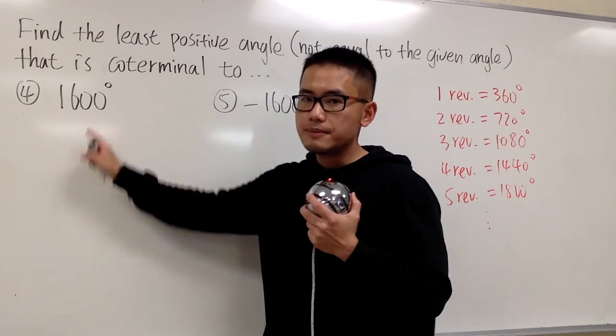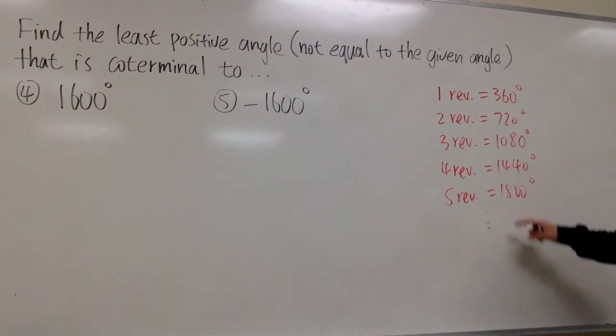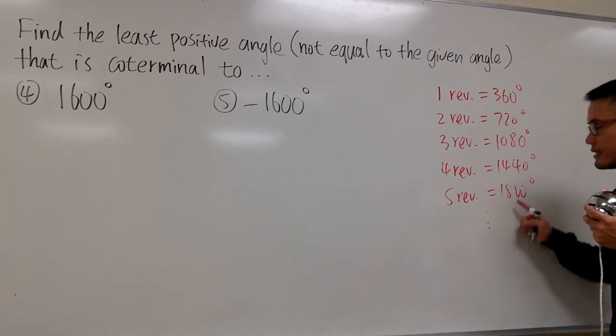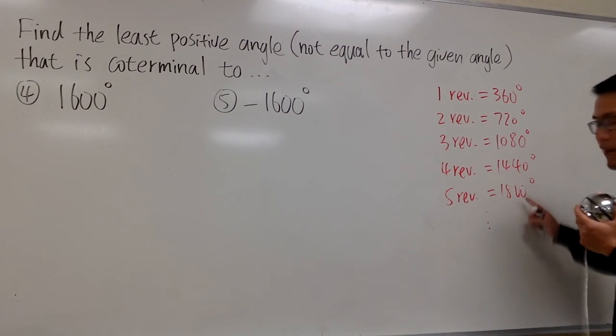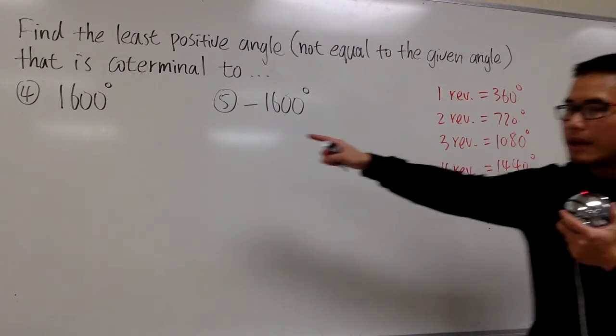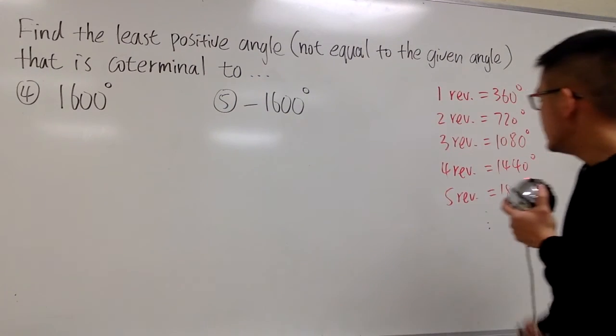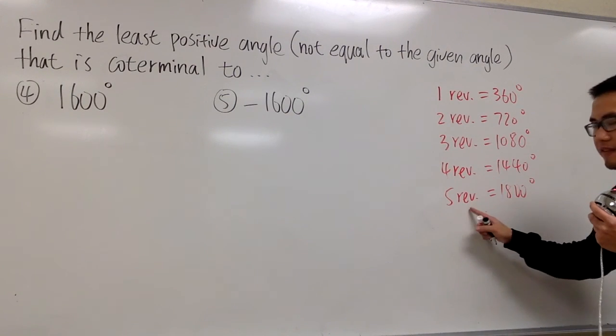Now let's take a look. 1600 degrees. This is, in fact, in between of this and that. 1600 is in between of this and that. That means this right here, it's in between of the fourth and the fifth revolutions.